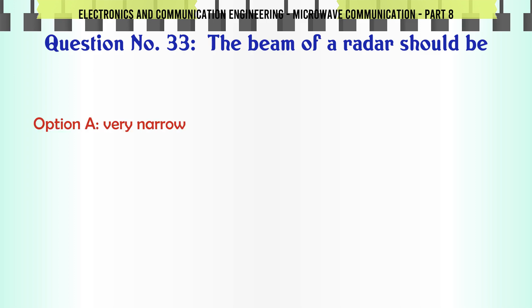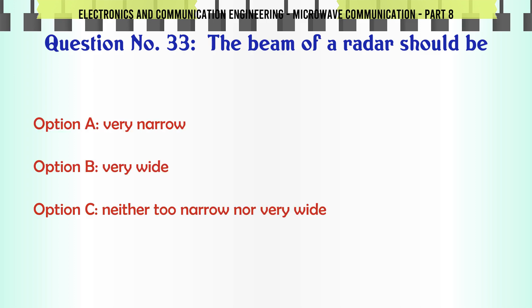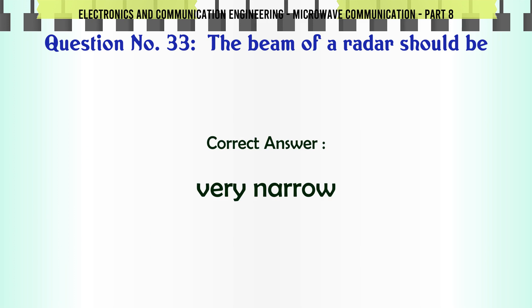The beam of a radar should be — A. Very narrow, B. Very wide, C. Neither too narrow nor very wide, D. Either B or C. The correct answer is very narrow.